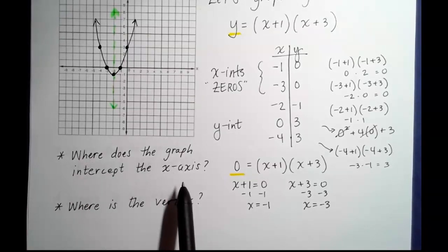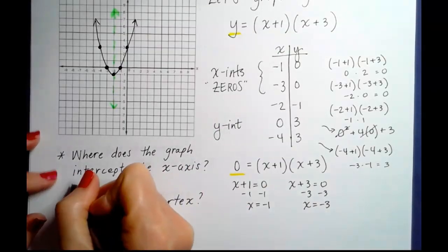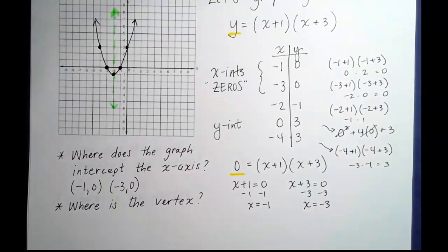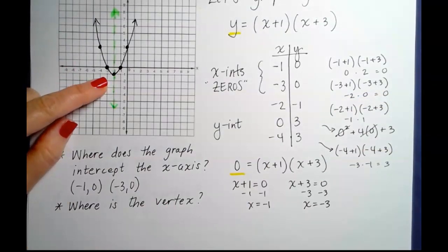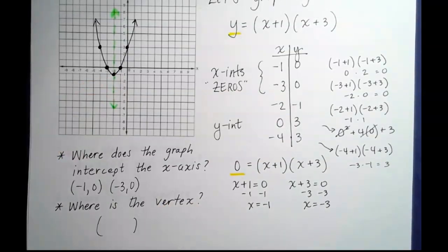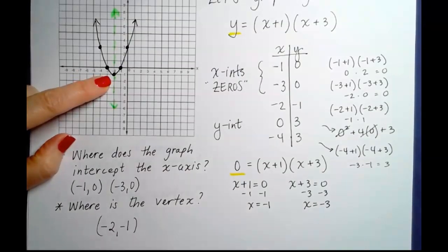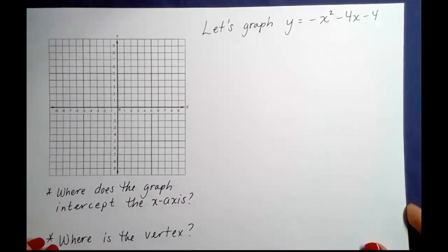Let's answer the two questions I'll ask at the end of each graph. Where does the graph intercept the x-axis? At the zeros: (−1, 0) and (−3, 0). Where is the vertex? Since this parabola opens upward, the vertex is the lowest minimum point, located at (−2, −1).